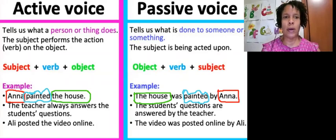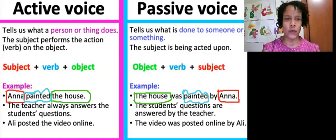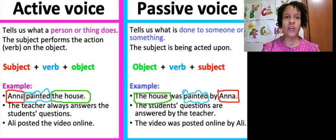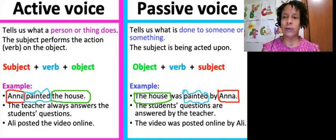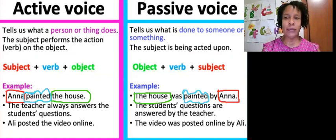Today we're going to talk about active voice and passive voice. Let's look at active voice first. Active voice tells us what a person or thing does. The subject performs the action verb on the object: subject plus verb plus object.